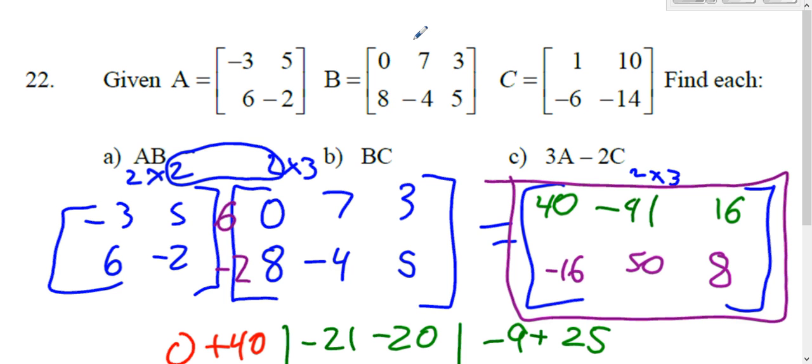For B times C, this is a 2 by 3. This is a 2 by 2. The inside dimensions are not the same. We have a 3 and a 2. They don't match, so we cannot multiply. This is undefined.